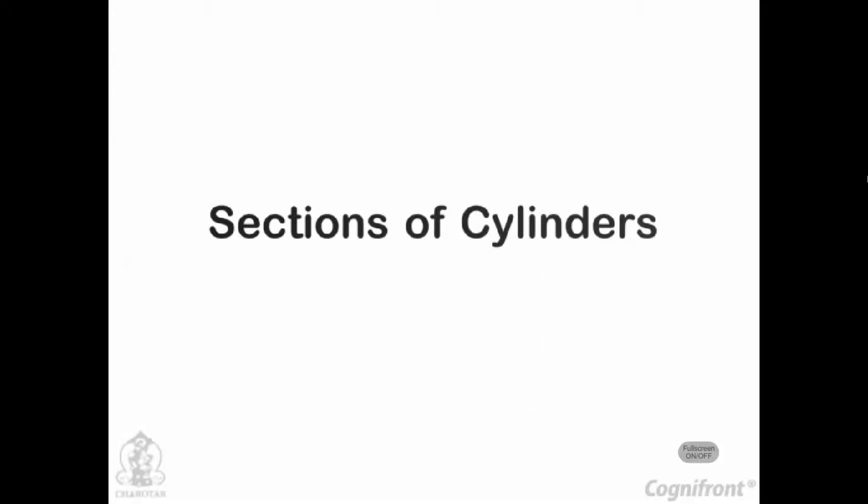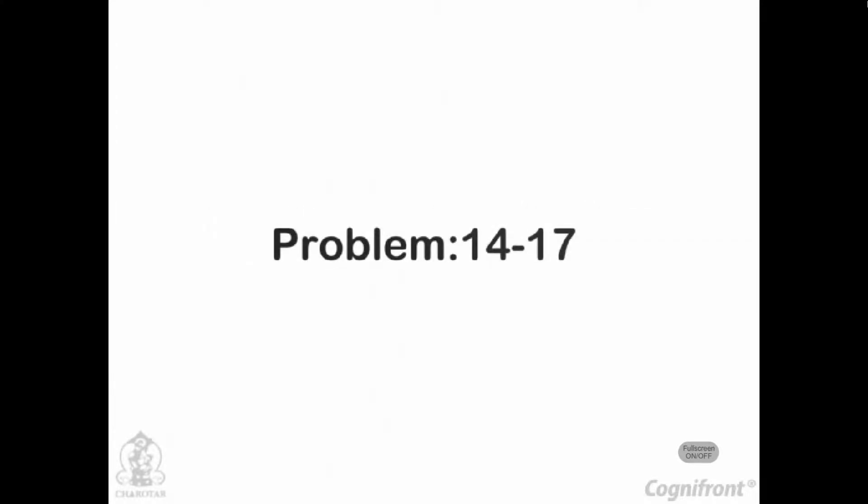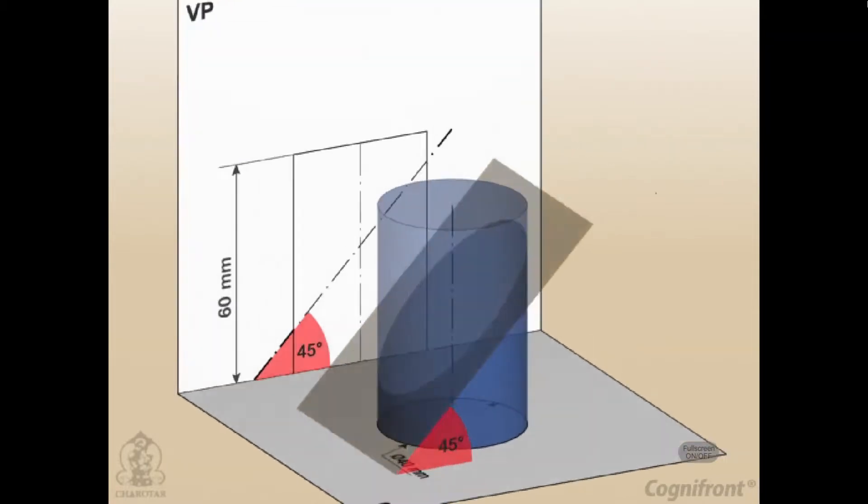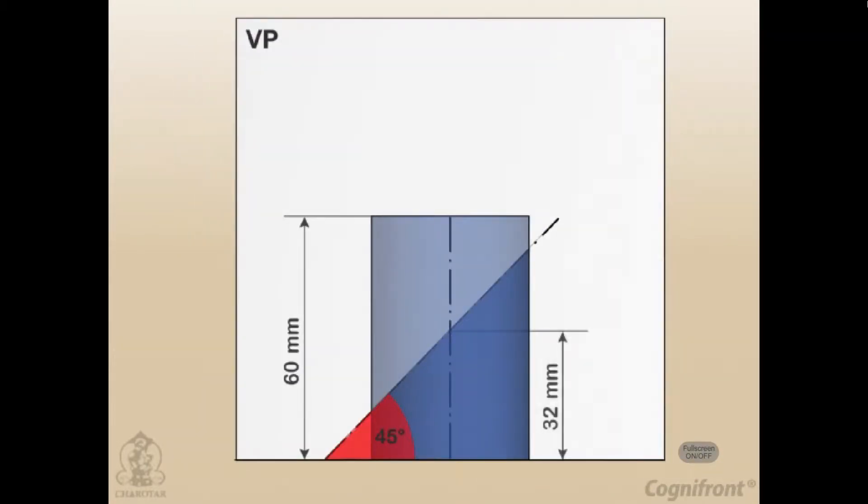Sections of Cylinders: Section plane inclined to the base. Problem 14.17: A cylinder of 40 mm diameter, 60 mm height and having its axis vertical is cut by a section plane perpendicular to the VP, inclined at 45 degrees to the HP, and intersecting the axis 32 mm above the base.